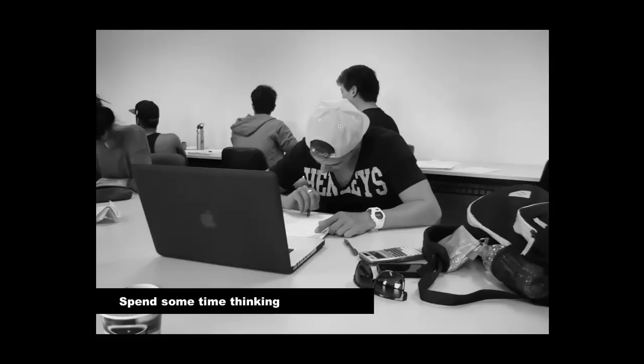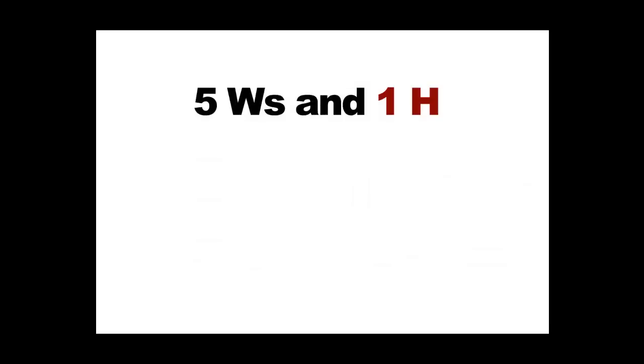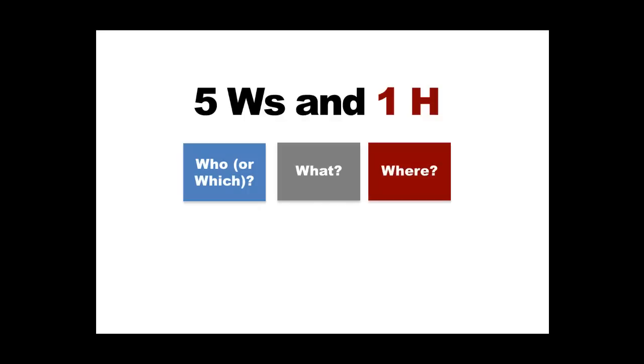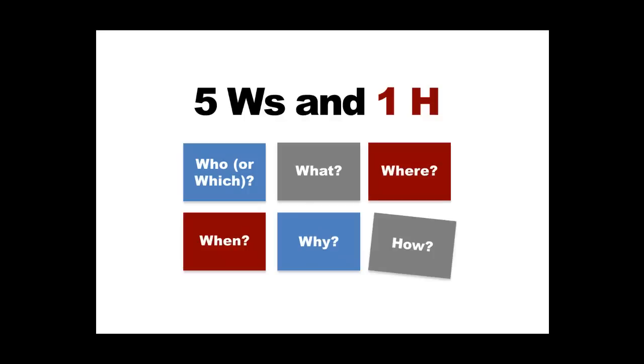To interrogate the question, use the five Ws and one H. This involves looking at the question and asking who or which, what, where, when, why, and how. This will help you to go into more depth and put the question into some sort of context.